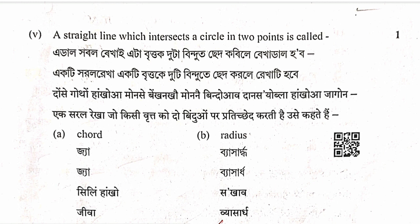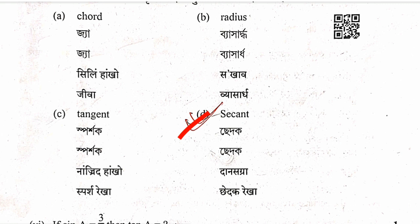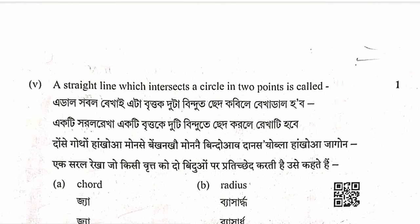Question 6: A straight line which intersects a circle at two points is called a secant. Option D is correct.